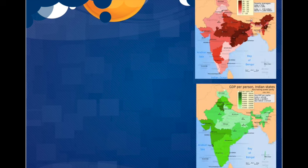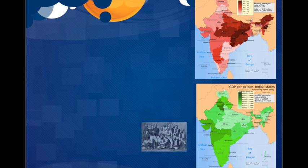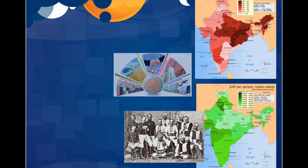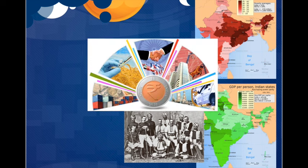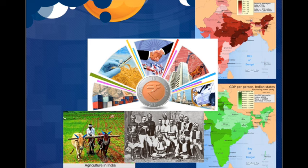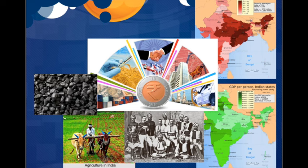India is a country with rapid economic and population growth. It is a major player in the world market and has become more and more involved since its independence from Great Britain in the early 1950s. It has the 9th largest economy by GDP and continues to grow every day. Most of its economy is from agriculture, with slightly less than half the population involved in the industry, ranging from small home subsistence farming to large commercial operations. India is also known for its coal production, making it the 4th largest producer of coal in the world.